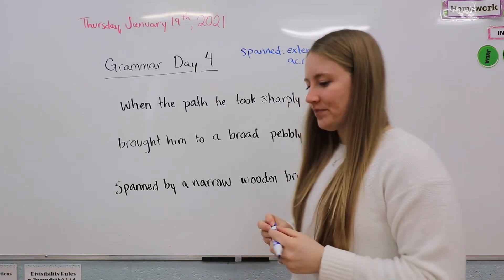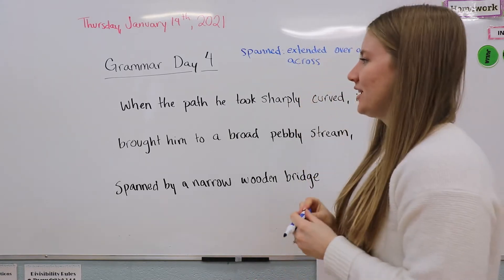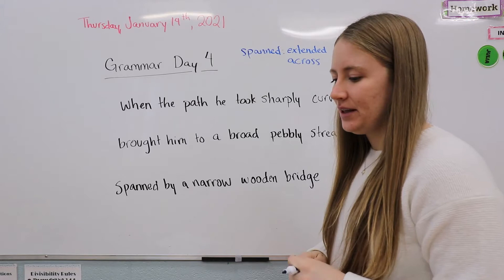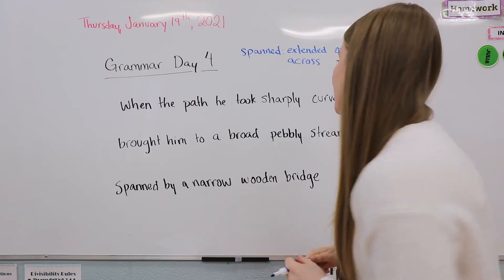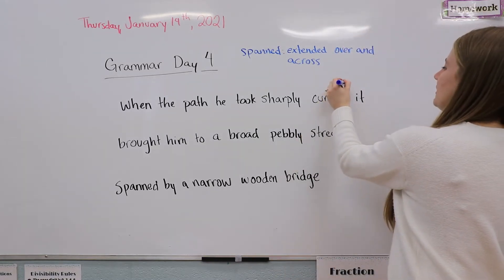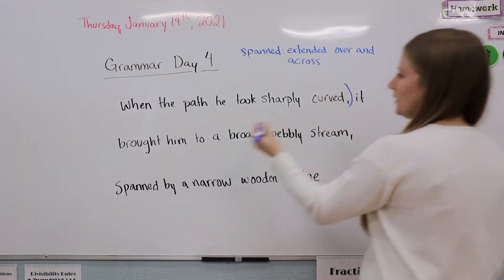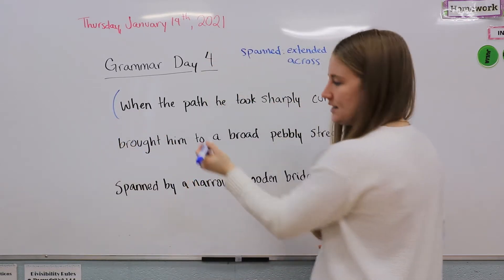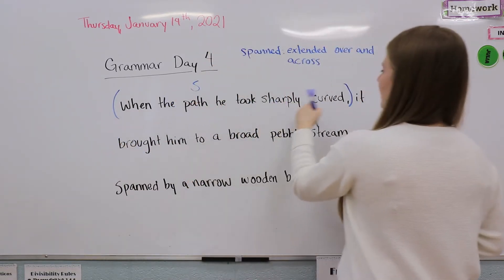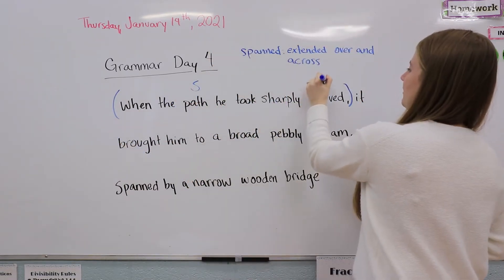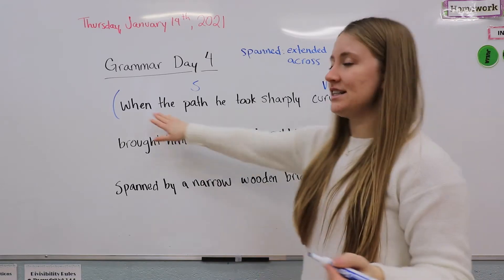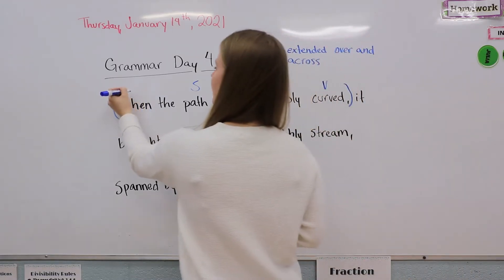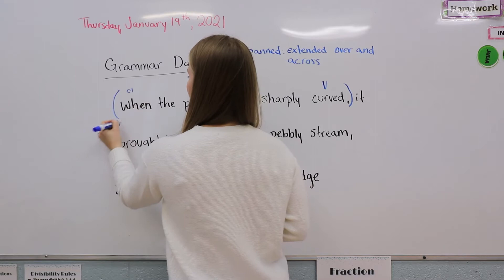We're going to start with this clause right at the beginning, because we know that this is a little clause. The path is the subject and curved is the verb. Because it starts with 'when,' which is a clause starter, we know it's a dependent clause.